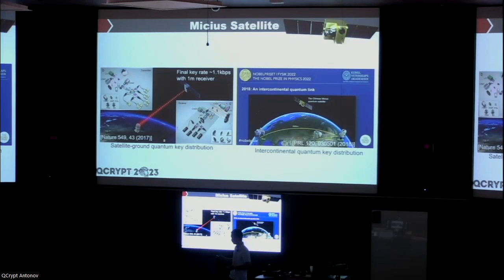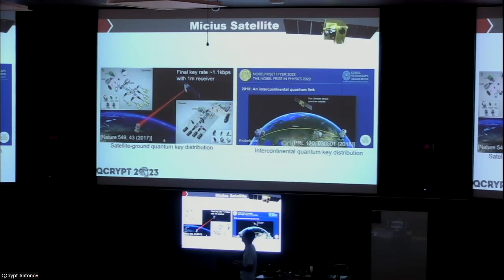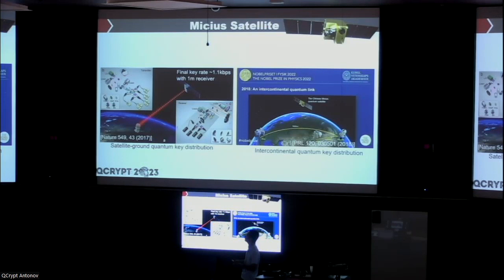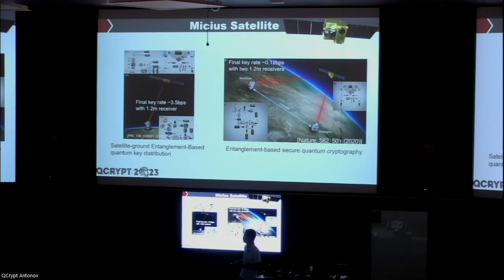We demonstrated several experiments. The first is satellite-to-ground quantum key distribution, together with the Xinglong ground station where the telescope diameter is about one meter. The final key rate is about 1.1 kbps. We also did QKD between different ground stations — one in Nanshan and one in collaboration with our team in Austria in Graz — with the satellite as a relay, sharing keys between the ground stations and protecting a continued video conference between the Chinese Academy of Sciences and the Austrian Academy of Sciences.